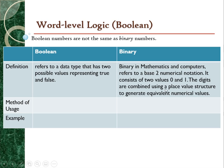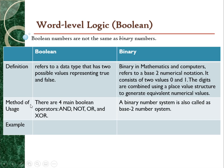These digits are combined using a place-value structure to generate equivalent numerical values — for example, binary converted to decimal or binary converted to hexadecimal. The method of usage: Boolean is expressed by four main Boolean operators such as AND, NOT, OR, and XOR, while binary is a number system also called the base-2 number system.